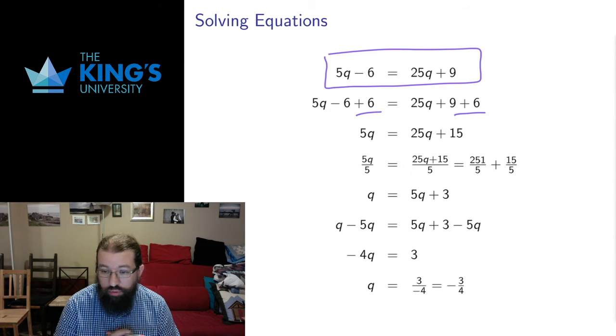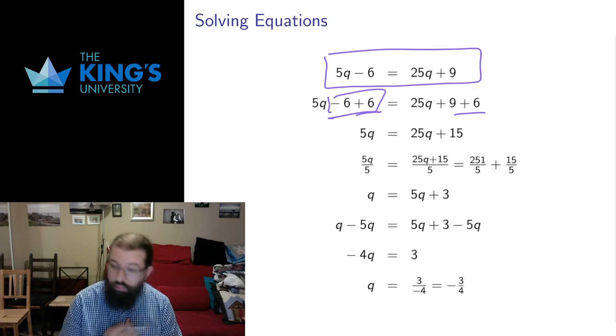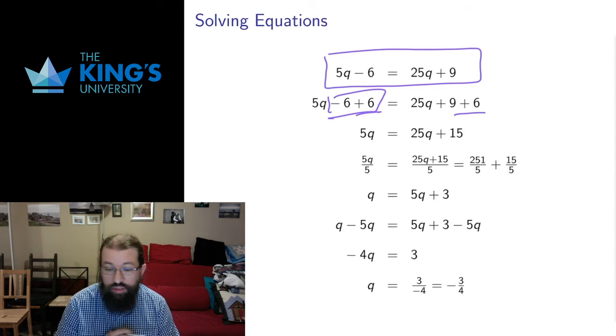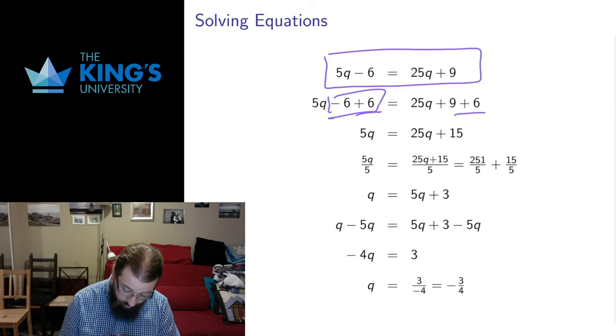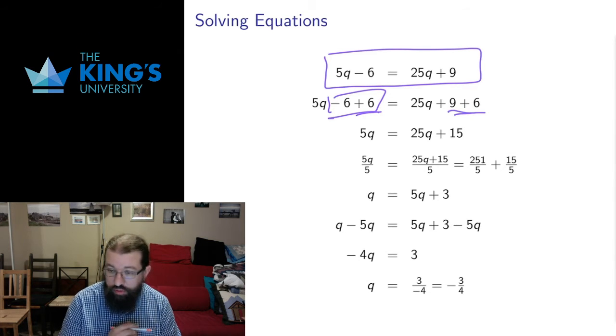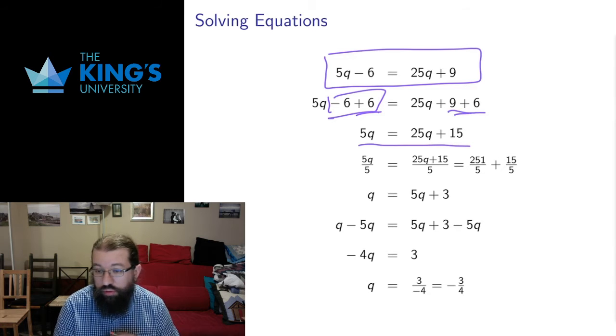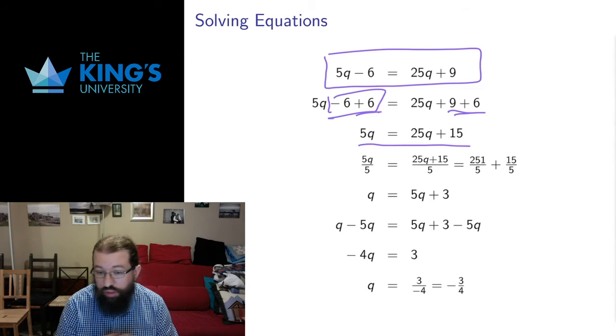What I'm going to do is add 6 to both sides of the equation. On the left side, the plus 6 minus 6, that's nothing - those go away. On the right side, 9 plus 6 is 15, and I get hopefully a simpler equation. The process of trying to solve is trying to do things to both sides to hopefully make it simpler.